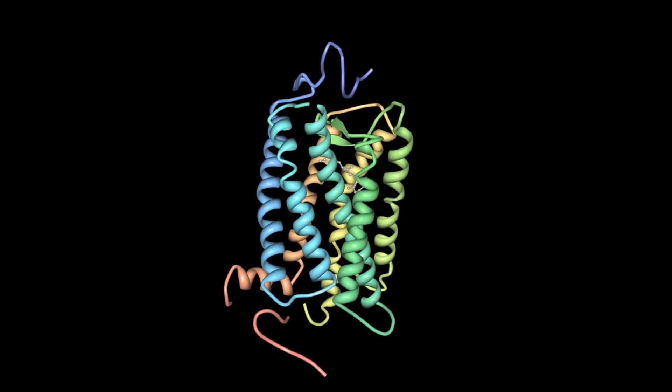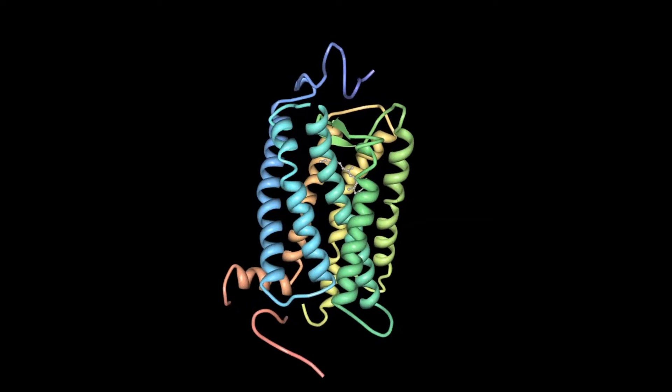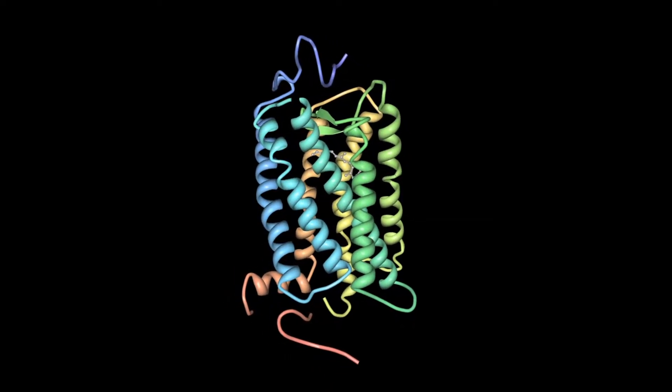Rhodopsin is a light-sensitive G-protein-coupled receptor, and in fact, it was the first GPCR to have its crystal structure determined by X-ray crystallography.